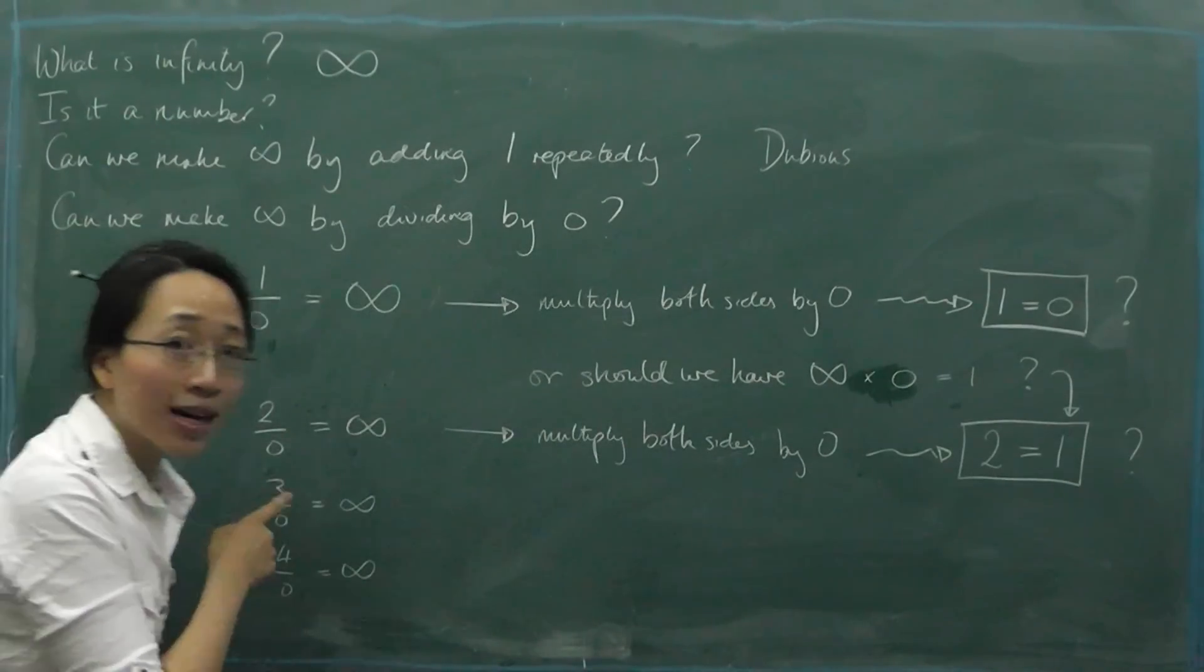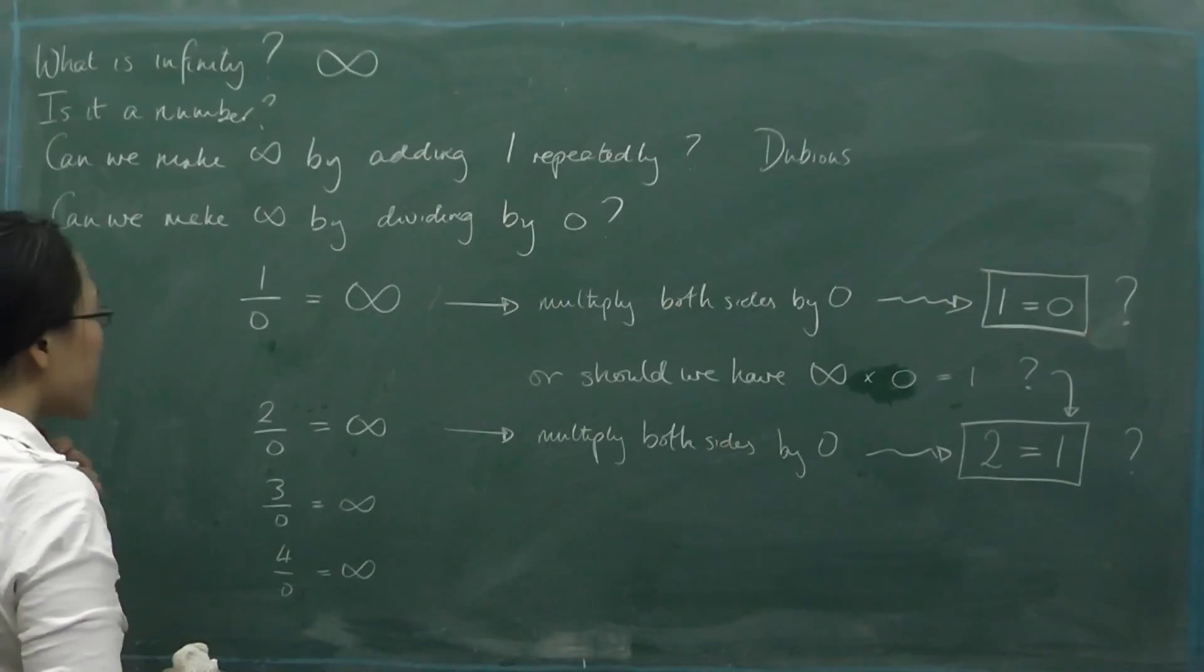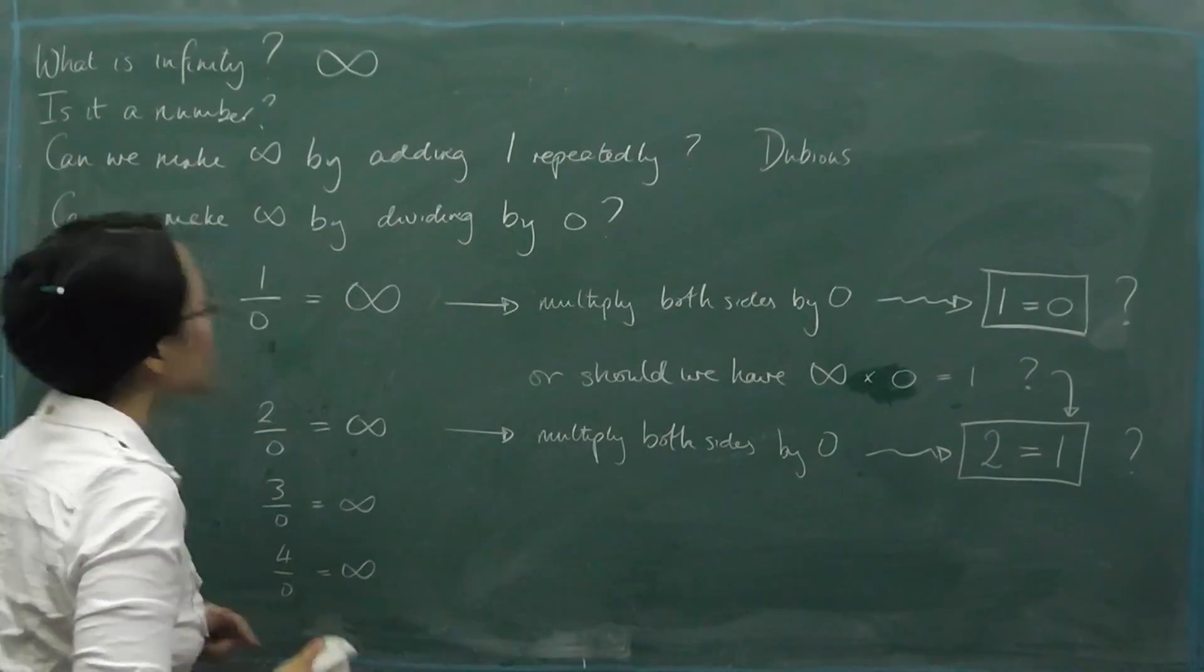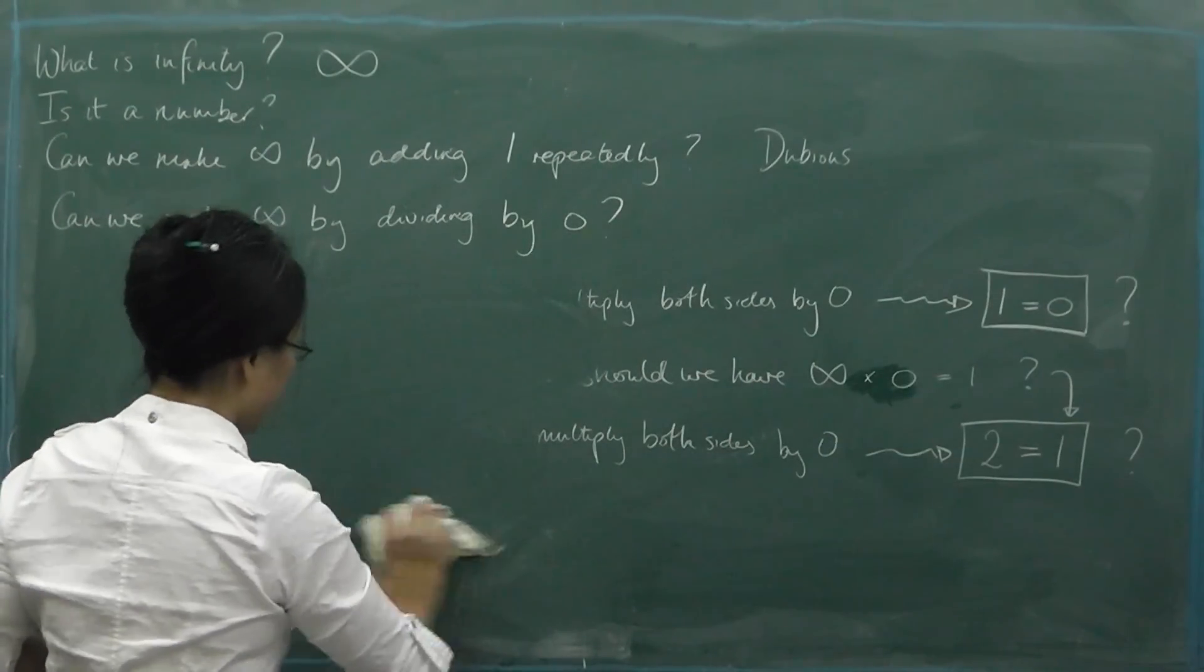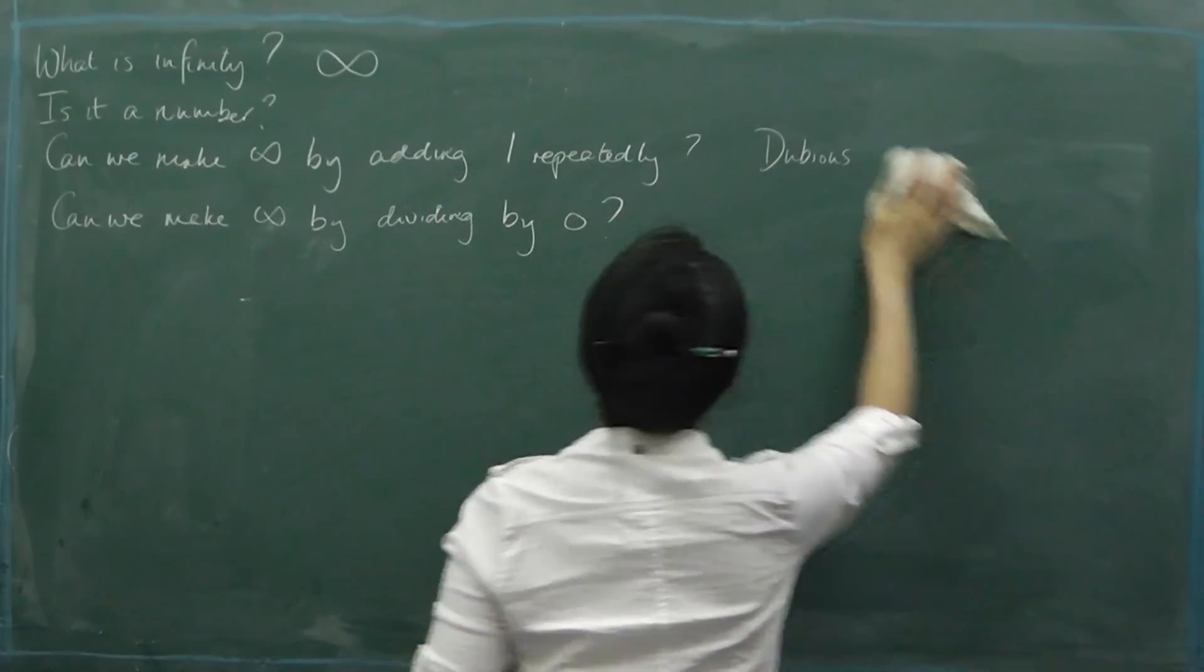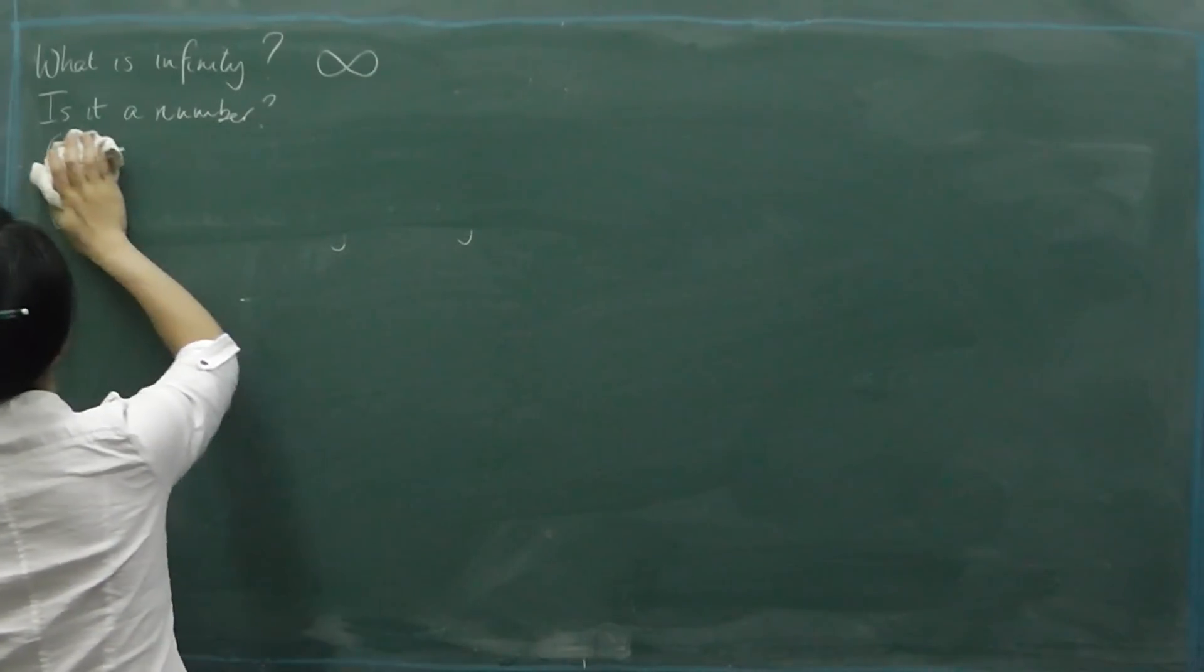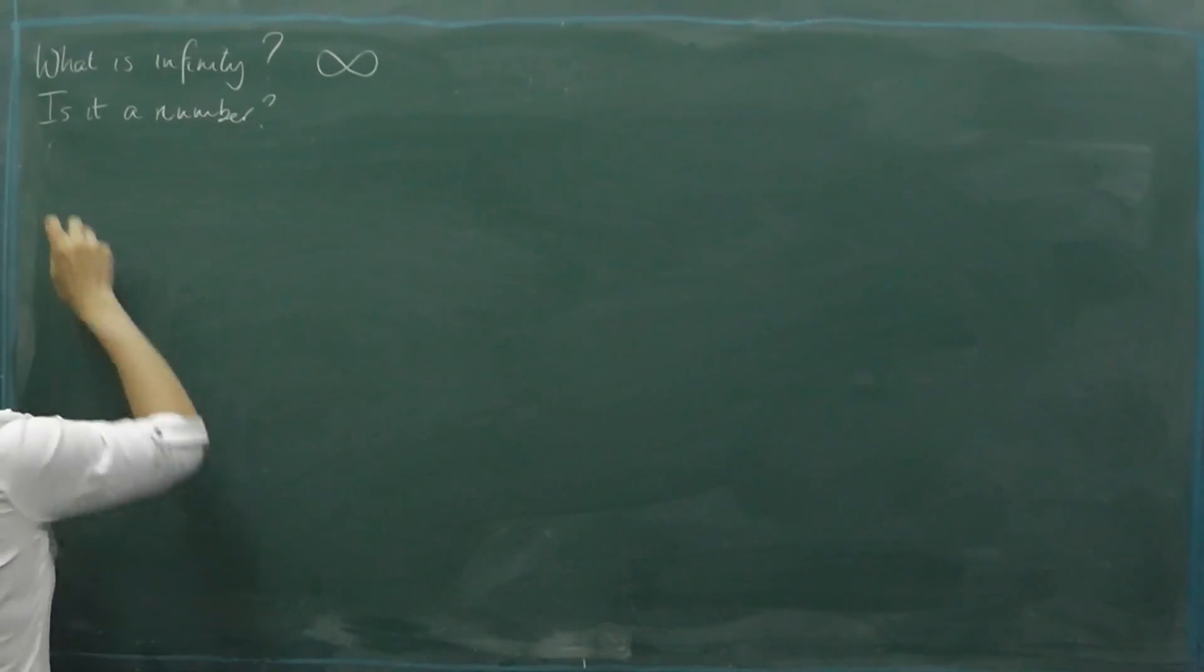Right, so we've tried dividing by zero to get infinity. Let's try manipulating infinity a bit as if it were a number. So let's try adding things to infinity. We've tried dividing by zero. Let's try adding. Addition.